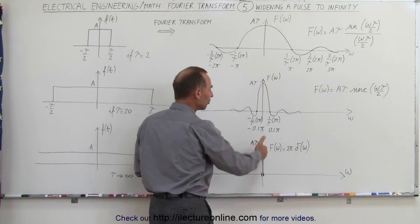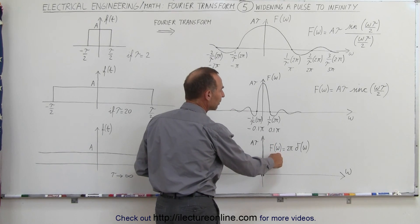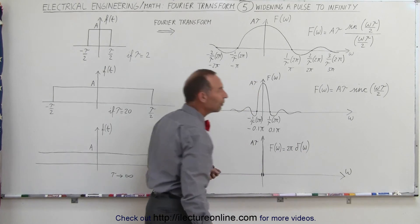We have infinite height at 0, 0 everywhere else, and it turns out that the Fourier transform equals 2 pi times the delta function in the frequency domain.